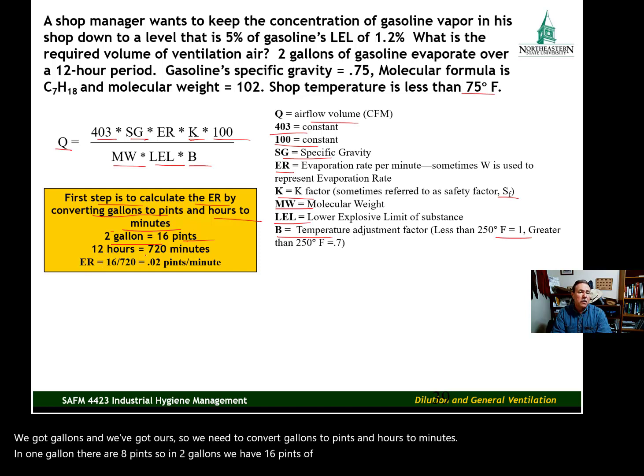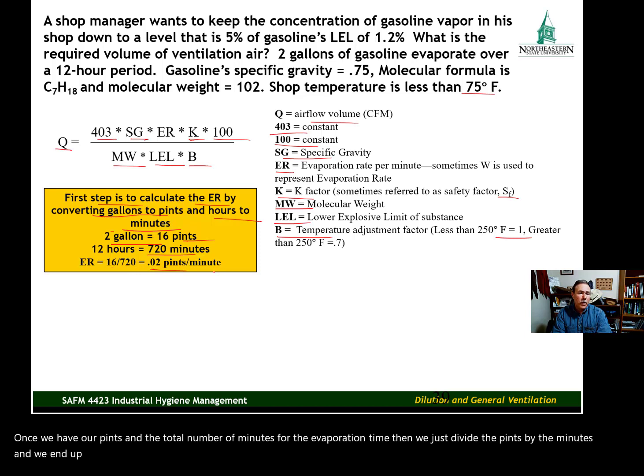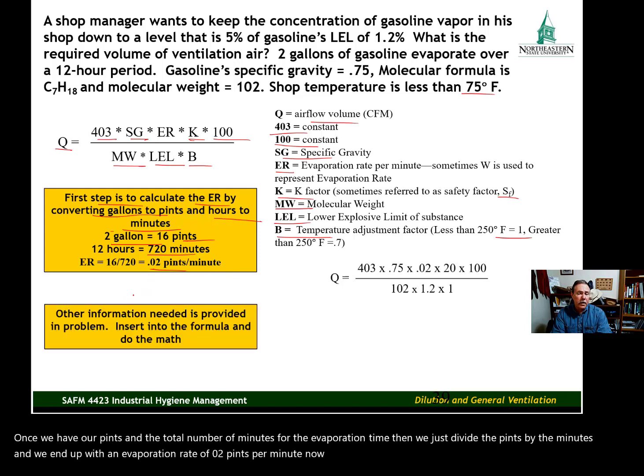Once we have our pints and the total number of minutes for the evaporation time, we just divide the pints by the minutes and we end up with an evaporation rate of 0.02 pints per minute.